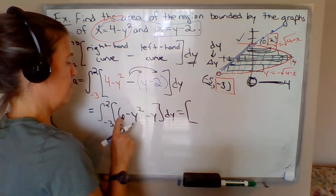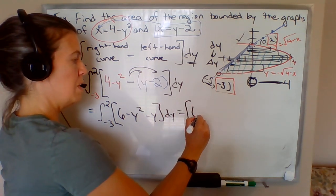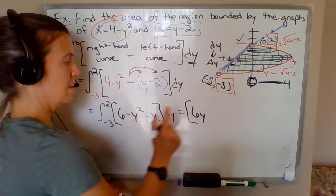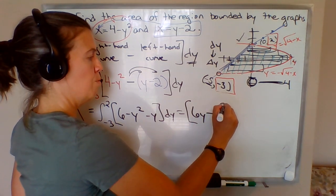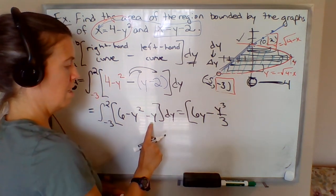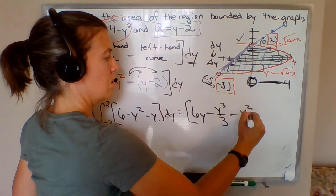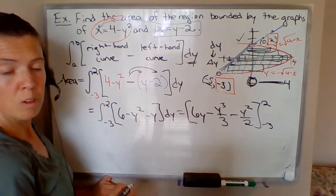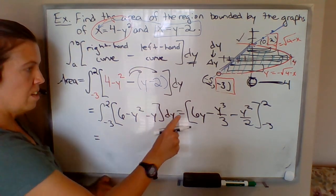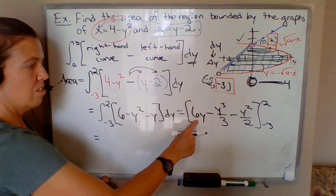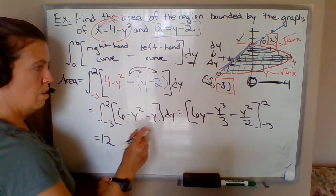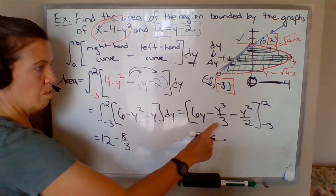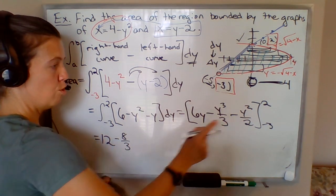The antiderivative of a constant will be that constant times y, since that's our variable of integration. So 6y minus, for y², antiderivative will be y³/3 minus antiderivative of y is y²/2. This is evaluated from -3 to 2. So if we plug in 2: 6 times 2 minus 2³/3 minus 2², which is 4/2, so that'll be 2.